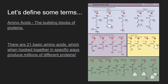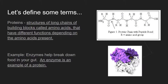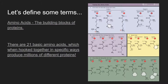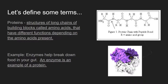Think of amino acids as the smaller legos, and proteins are the bigger structures made out of legos. Proteins are long chains of amino acids — the building blocks — hooked together, forming chains that fold around in different ways. The shape of the protein determines its function, and that shape is dictated by the sequence of amino acids that build up the chain. Amino acids are the building blocks of proteins — that's all you need to know.